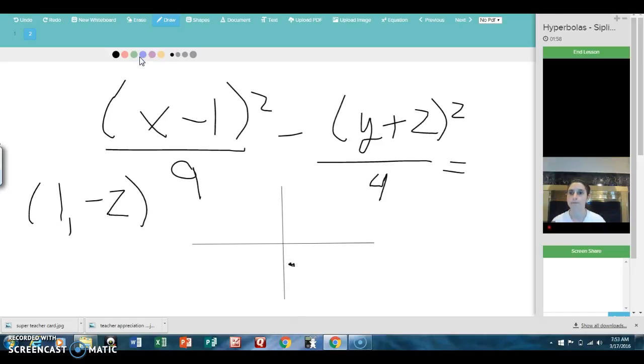Now, this 9, the number underneath the x, is my x-radius. It means go over, left and right, 3 units from the center. So, I'm going to go over 1, 2, 3. That's going to be 1 of them, and then 3 in the other direction, 1, 2, 3.